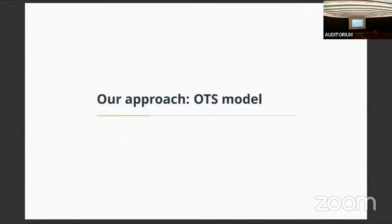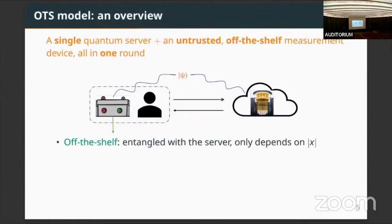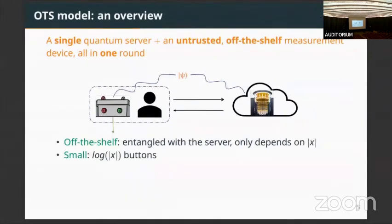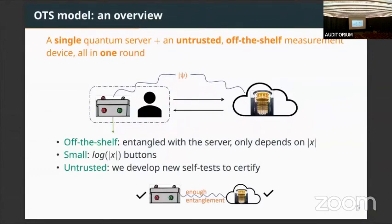To tackle all those issues, we propose a model we call the OTS model. In such a model, a single quantum server does the bulk of computations, and the client has an untrusted off-the-shelf measurement device, with only one round of interaction required. Here, off-the-shelf refers to the fact that this measurement device is entangled with the server but does not depend on the computation instance — it only depends on the size of the instance. This measurement device is also very small: you can imagine it only has login buttons, which can specify constantly many qubits you want to measure. We do not assume this measurement device is trusted; instead, we develop new self-tests to verify that the server and the off-the-shelf device share enough entanglement and can perform commanded quantum measurements.